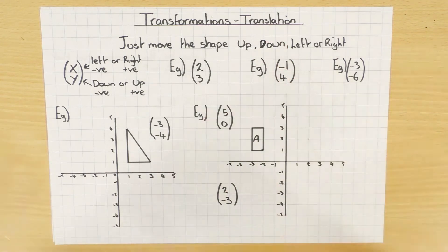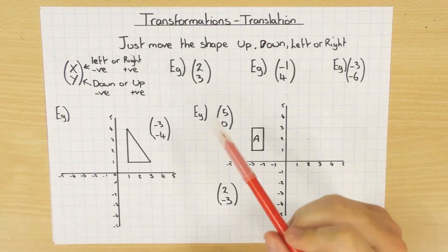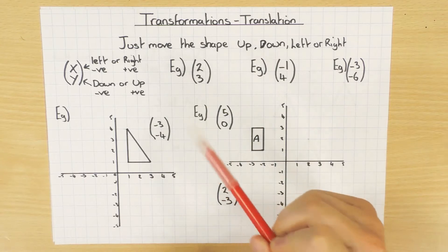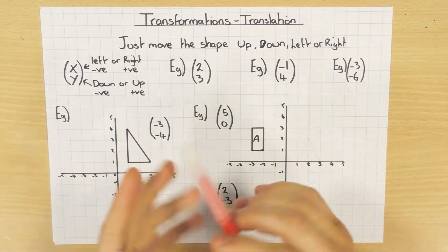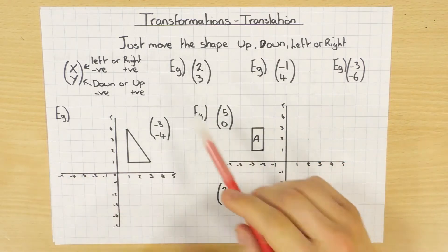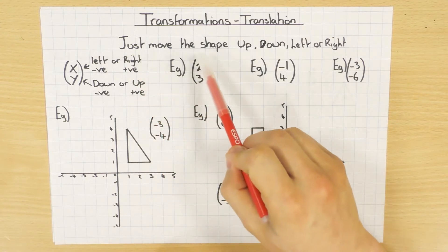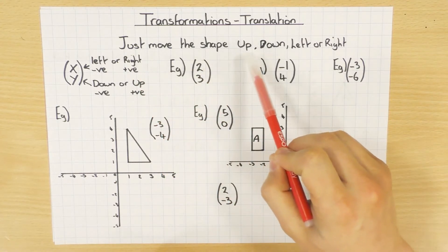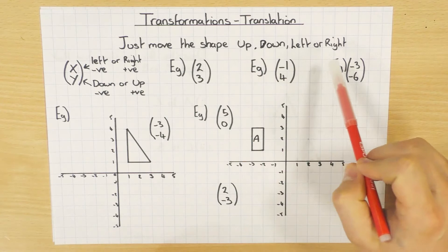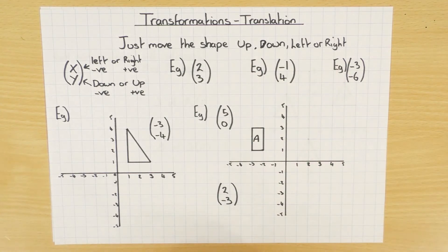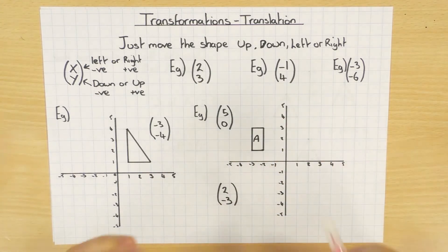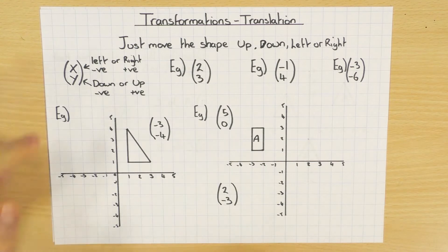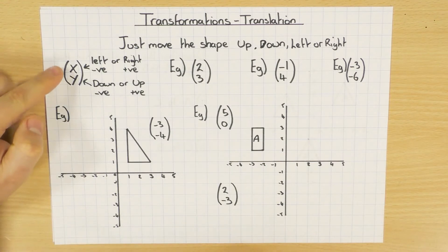We're going to have a look at translation. The key thing with translation is that the shape does not change its size, does not rotate, does not flip — it doesn't do anything. All it does is just move, and there are four different options: up, down, left, or right. It's quite easy to spot a translation, and to describe how it's moved we use what's called a column vector.